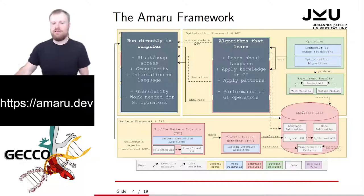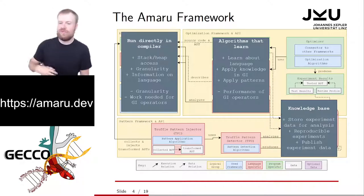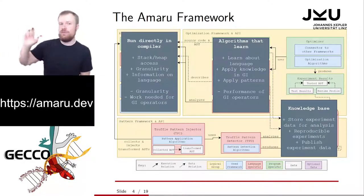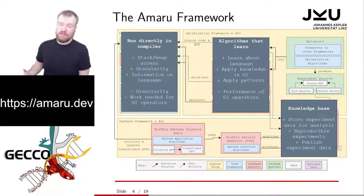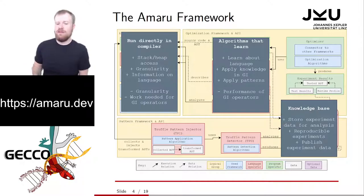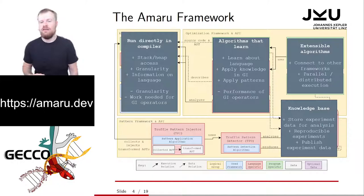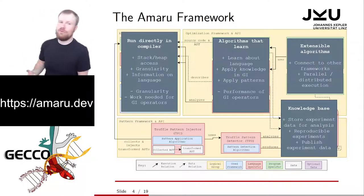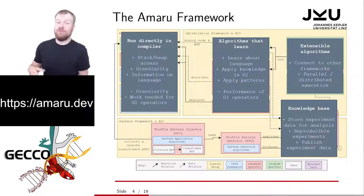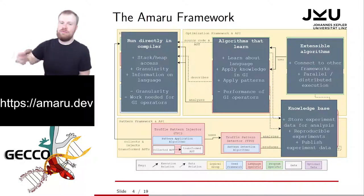On the knowledge base side, we use a Neo4j database to store all experiment data for later analysis. We identify the individuals in the population, store them, and also identify which crossover or mutation operator was responsible and what input it took, so we can trace the genealogy later. Another advantage is that we have instantly reproducible experiments, because all settings and run data are stored in the database, and you can publish that by just publishing a Neo4j database export. At the optimizer side, we have extensible algorithms — the current connector is to a realistic lab, which is a meta-heuristics suite. We also allow for parallel and distributed execution, where workers can run on any PC, connect to a command plane, and that command plane runs your experiments.